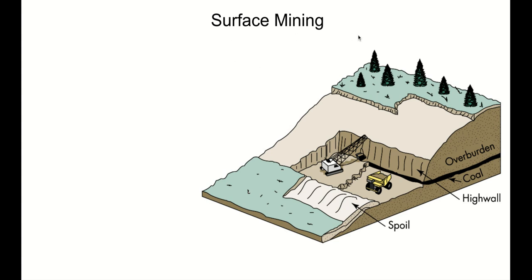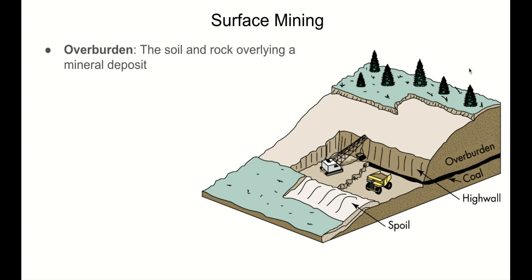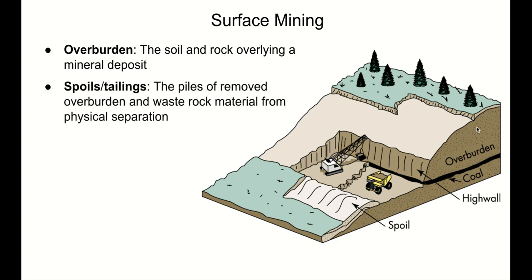Surface mining is defined by removing all of the land and material above your mineral resource. That land and material has a specific name: overburden — the soil and rock overlying a mineral deposit. It's over the mineral deposit and it's a burden. This is also the intact soil and ecosystem. Once we pull all that overburden off using bulldozers, excavators, and heavy machinery, the pile of waste — trees, rocks, gravel, stones — everything dumped in a big mountain off to the side of our mine site is called spoils or tailings.